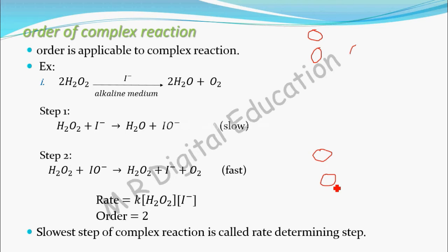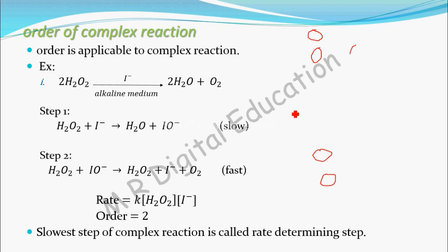Similarly, in a multi-step reaction the rate depends upon the slowest step. If the slowest step's rate is high, the overall rate will be high. If the slowest step's rate is slow, the rate of the whole complex reaction will be slow. That's why, for a complex reaction, the slowest step is called the rate-determining step.